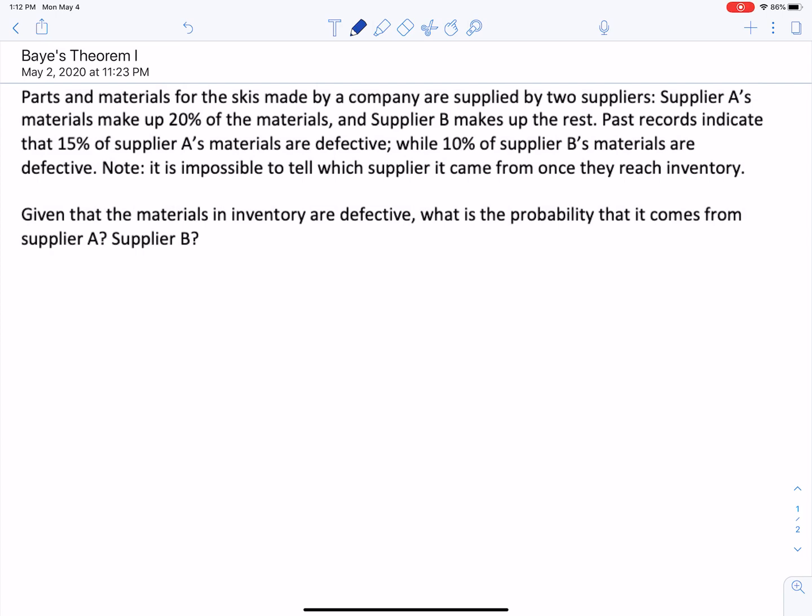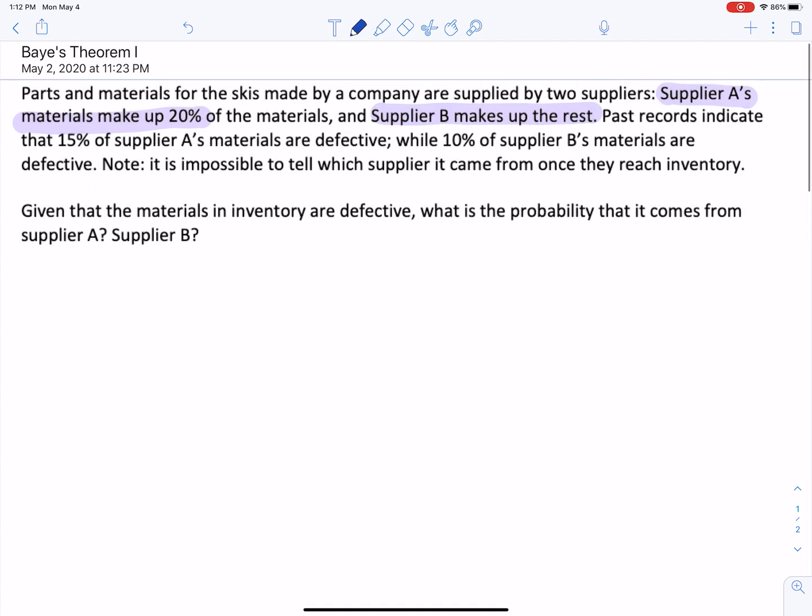We have parts and materials for skis made by a company that are supplied by two suppliers. Supplier A's materials make up 20 percent, and Supplier B makes up the rest. So in probability terms, if we have an item in inventory after all was said and done, the probability that it came from supplier A is 0.20, and the probability that it came from supplier B is 0.80.